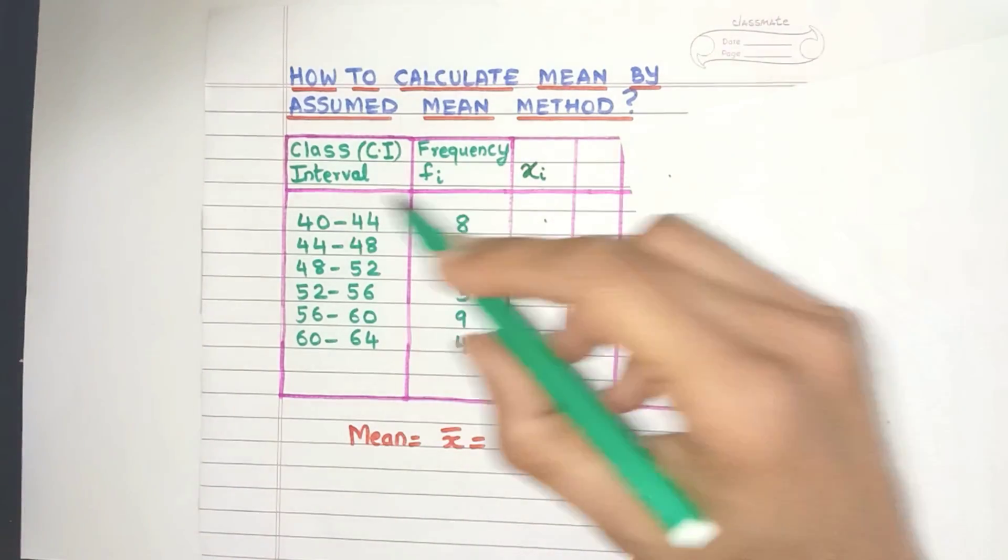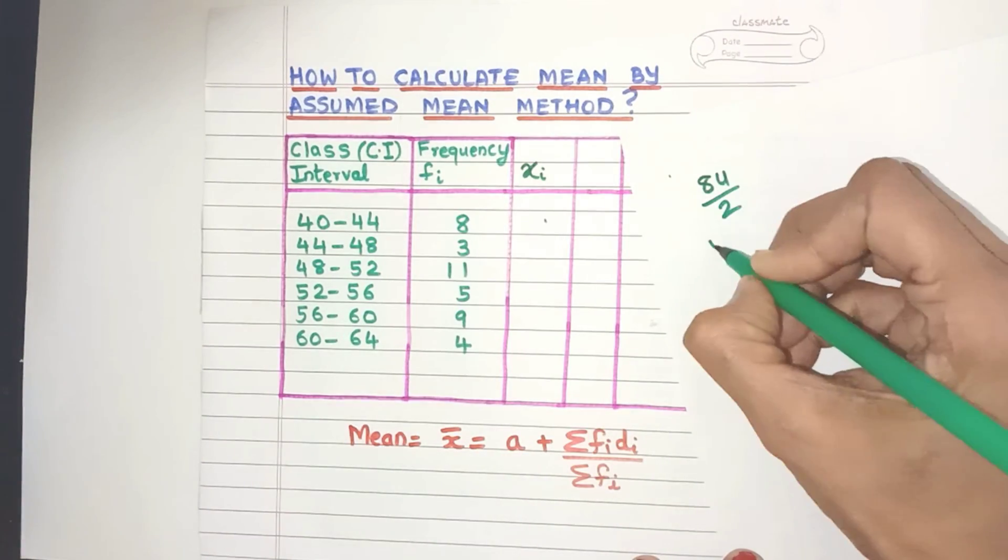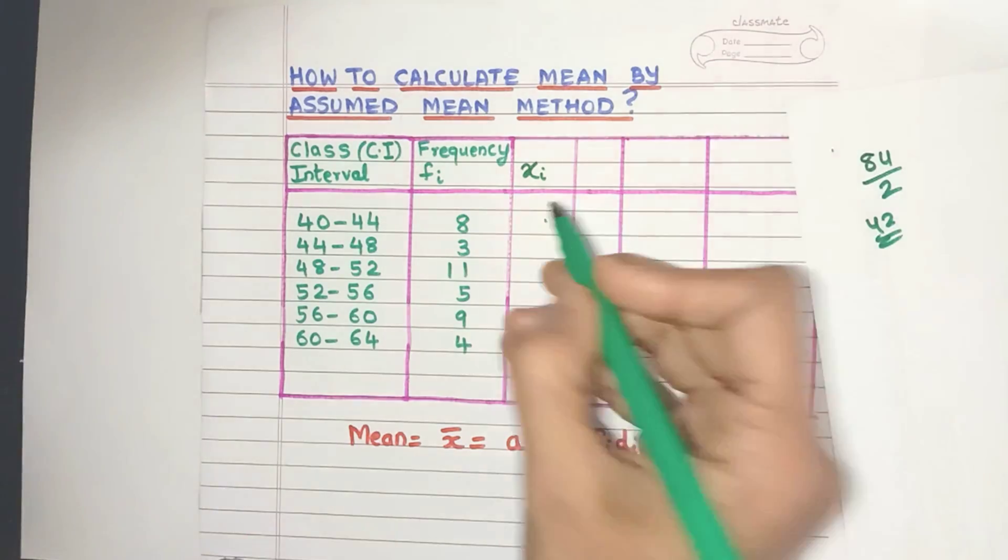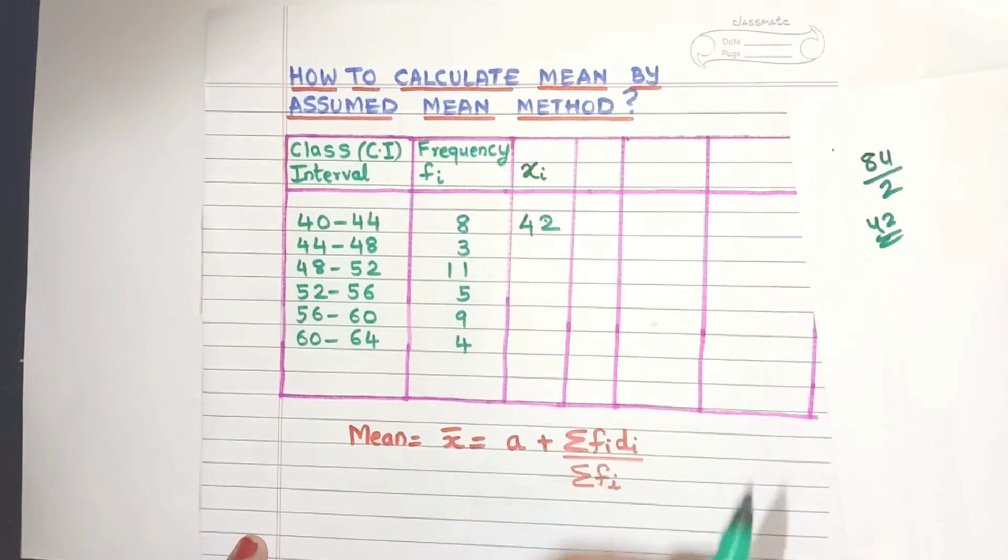So for example, here you'll get 40 plus 44 which is 84 divided by 2 which is 42. That's it. So you easily got your first xi value.